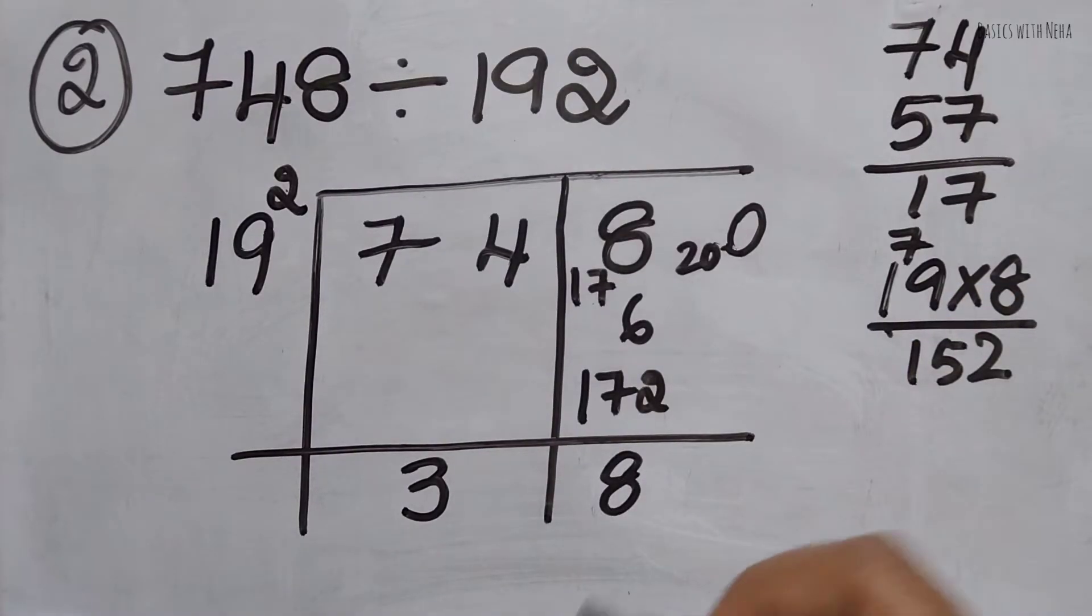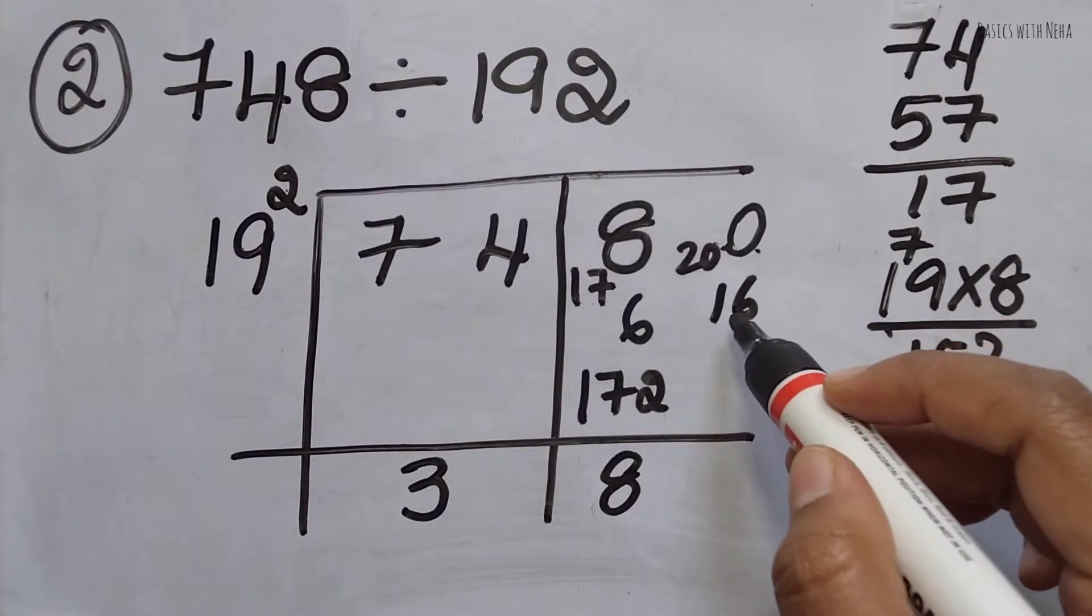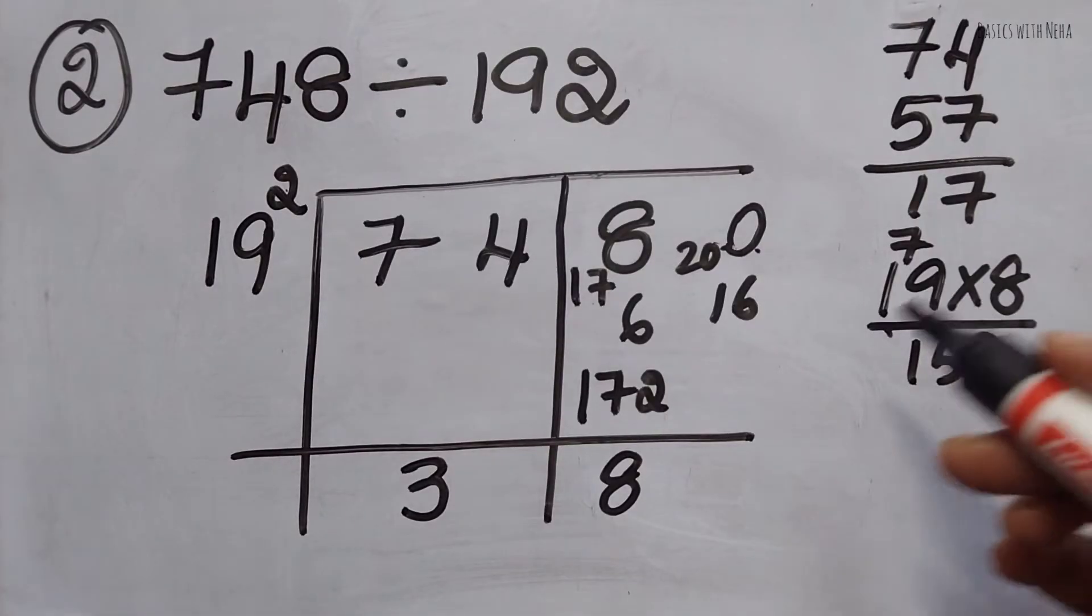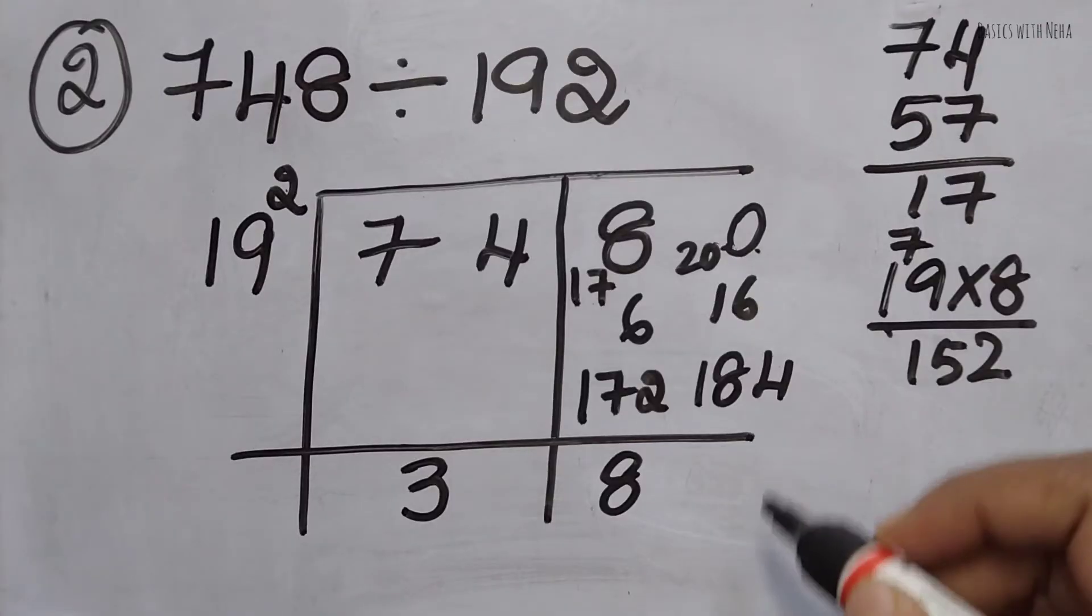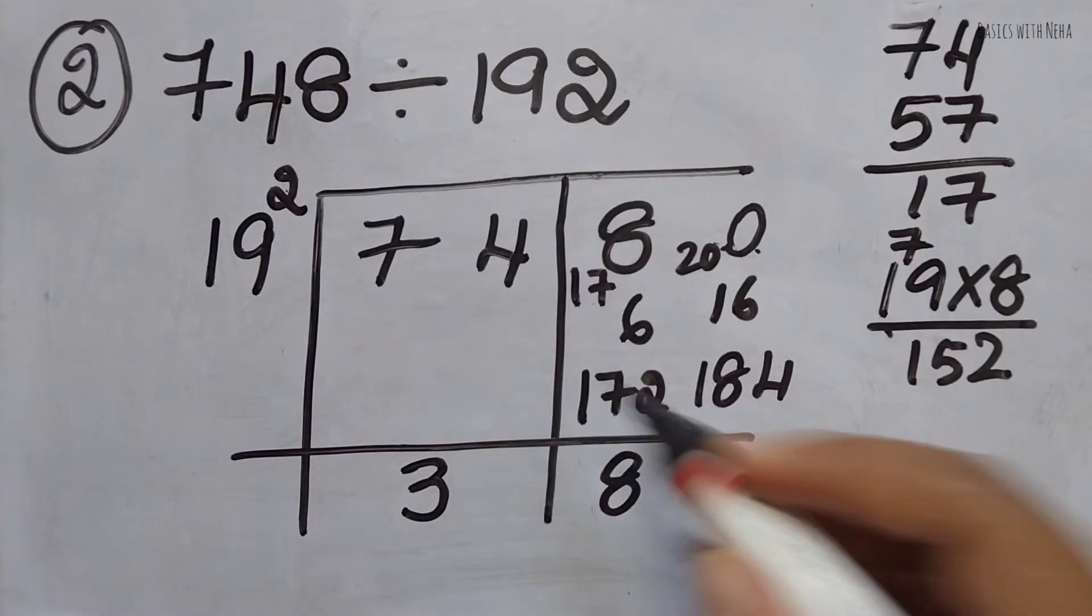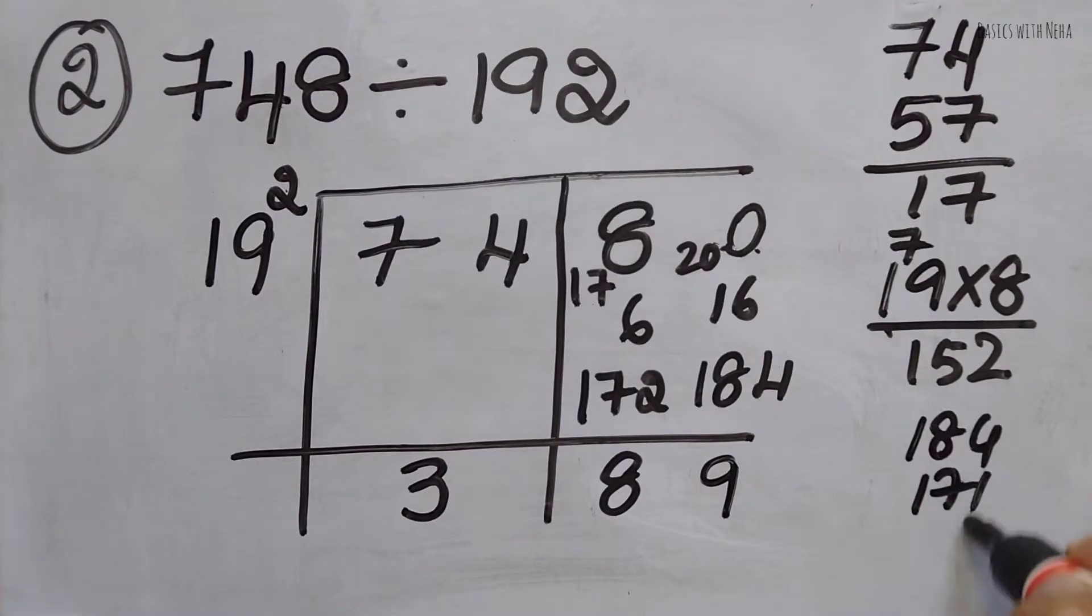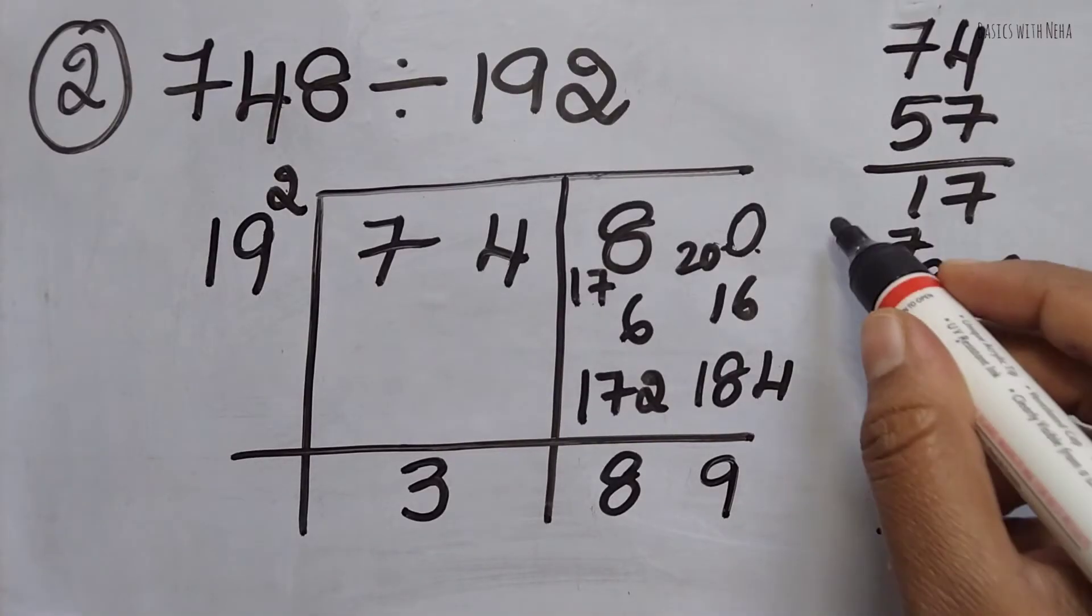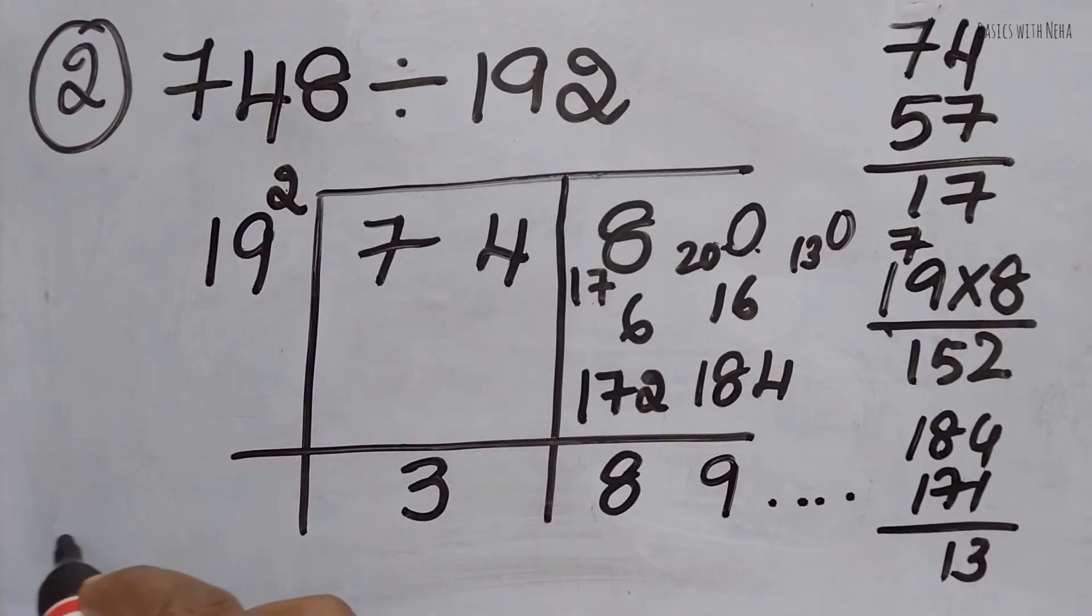172 minus 152 is 20. So I'll have 20 here as the remainder. Now I'm going to take 8. 8 times 2 is 16, so 200 minus 16 will be 184. Now I have 184. I have to see how many times will 19 go into 184. 19 times 9 is 171, so it is 184 minus 171, which will be 13.